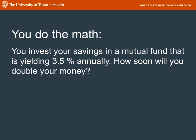Here's one handy way to use it. Let's say you're investing your savings in a mutual fund yielding 3.5% a year. How quickly will you double your money? 70 divided by 3.5 is 20 years. You're going to double your money in 20 years.